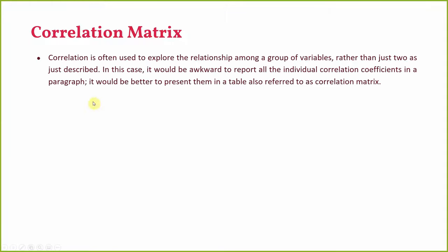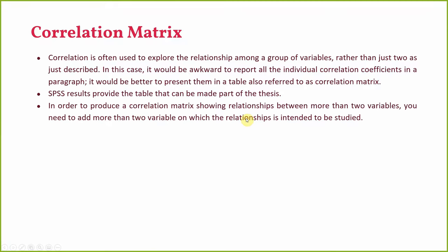What if you are interested in testing the relationship between more than two variables at a time? In that case, we use a correlation matrix. Correlation is often used to explore relationships among a group of variables. SPSS allows you to run a correlation matrix by putting in multiple variables and testing their relationships, and the resulting table is referred to as the correlation matrix.